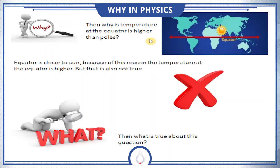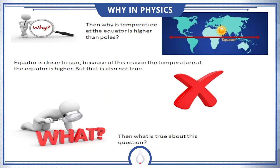Some people think that the equator is closer to the sun, and because of this the temperature at the equator is higher. But that is also not true — it is a misconception. So what is the true answer to this question? Let's try to find it.